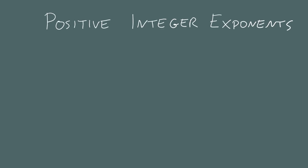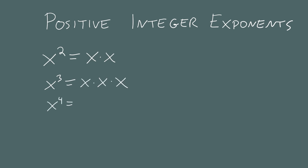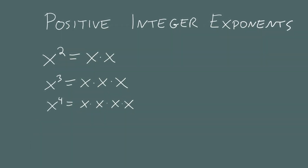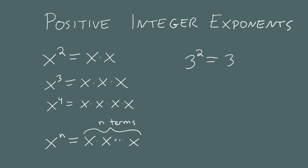First, let's remind ourselves what it means to take a number and raise it to the power of a positive integer. x squared means x times x. x cubed means x times x times x, and x to the fourth is x times x times x times x. It's just repeated multiplication — that's what the exponent is, just a compact notation. More generally, x to the nth power is x multiplied by itself n times. For example, 3 squared is 3 times 3, which is 9. And 5 cubed is 5 times 5 times 5, which is 125.